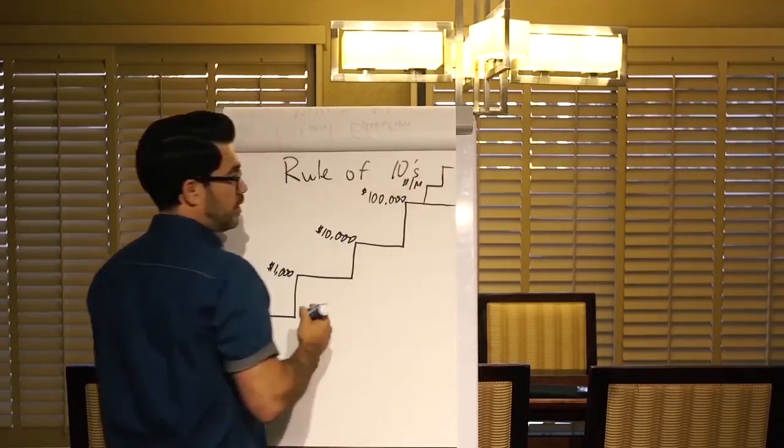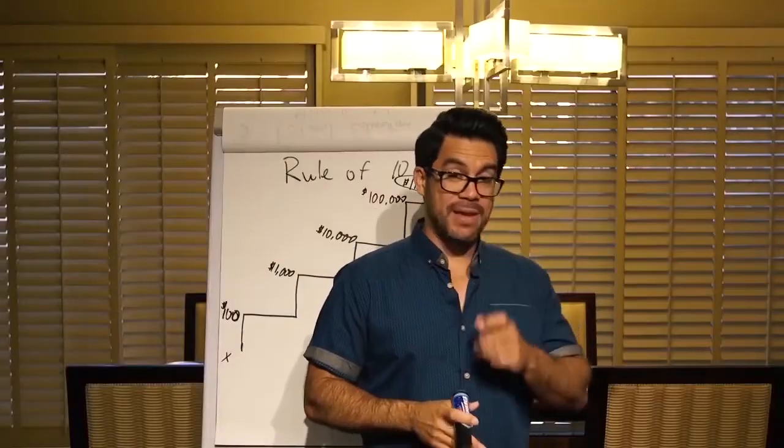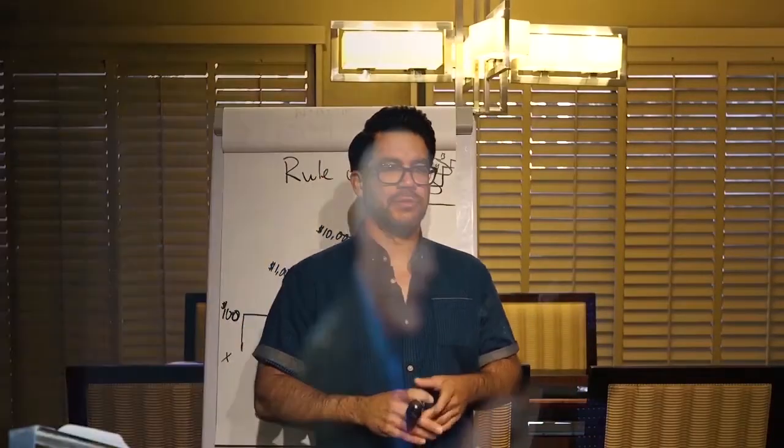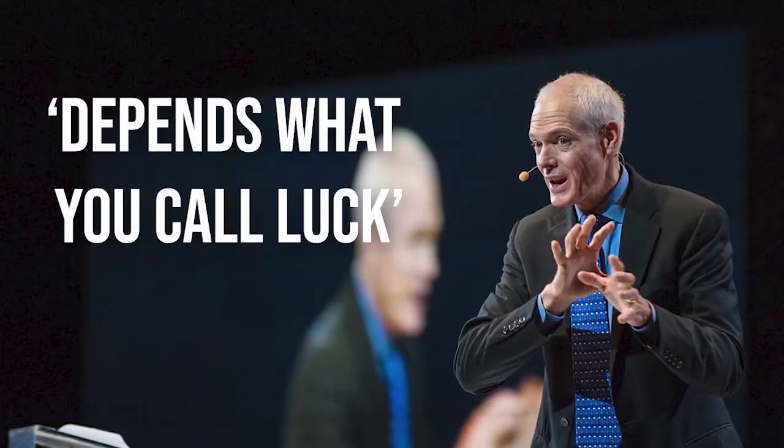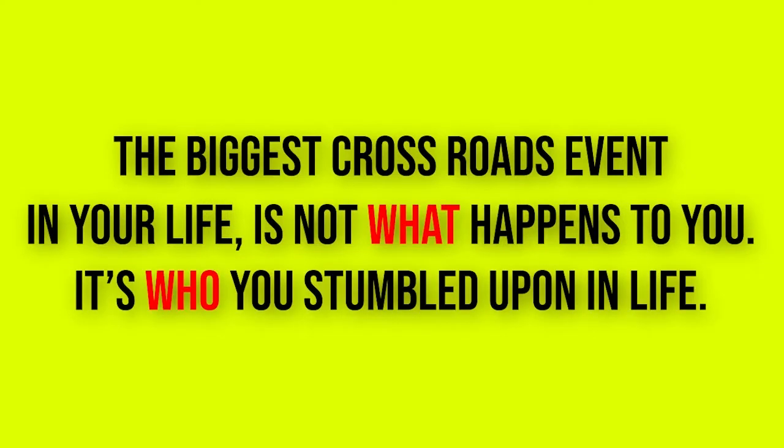This is a month, by the way. One million a month. And then you got the last one, 10 million a month. One of the most famous business books is by a guy named Jim Collins. He found the biggest crossroads event in your life is not what happens to you. It's who you stumble upon in life.